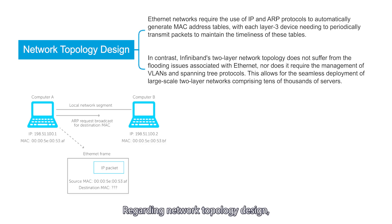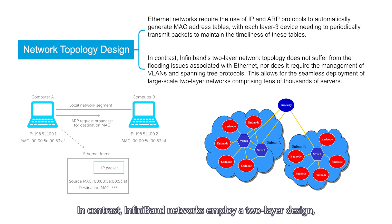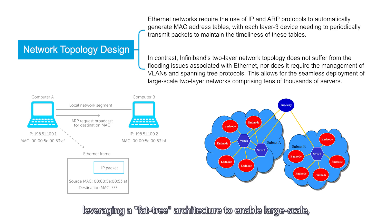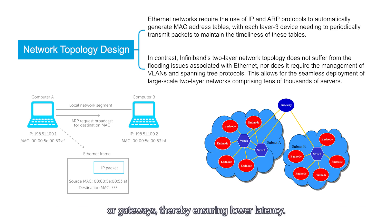Regarding network topology design, Ethernet networks typically utilize a three-layer architecture involving core switches, aggregation switches, and access switches, relying on IP and ARP protocols to maintain the MAC address tables. In contrast, InfiniBand networks employ a two-layer design, leveraging a fabric architecture to enable large-scale, non-blocking network deployments without the need for concepts like VLANs, routers, or gateways, thereby ensuring lower latency.